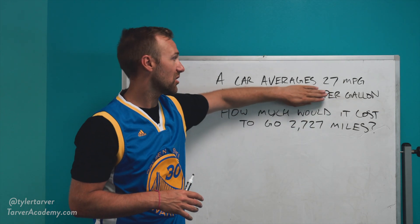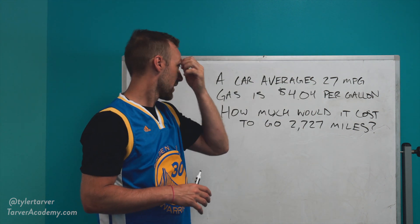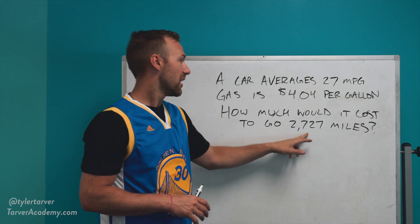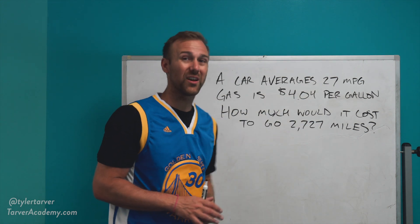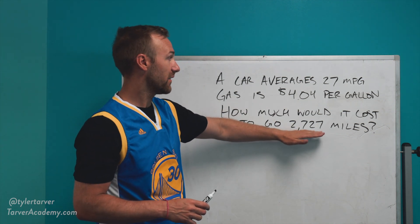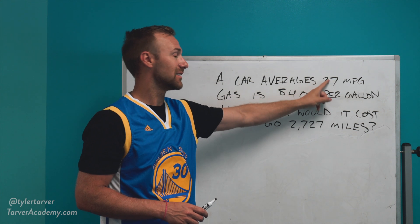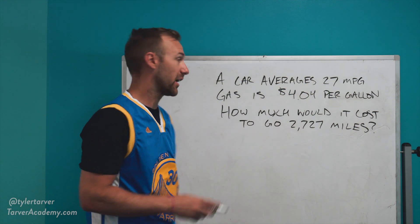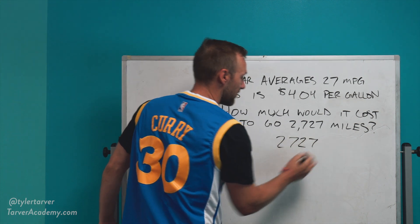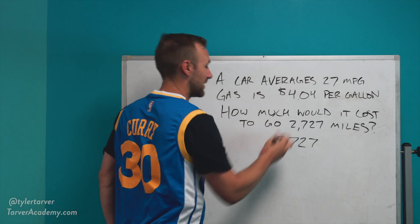This number — the cost — is almost useless to us at the beginning. We're just going to use the mileage values. If the car is averaging 27 miles per gallon and they're going a total of 2,727 miles, we want to know how many gallons this is going to take. So what I do is I take that 2,727 and divide it by 27.